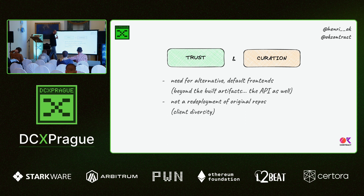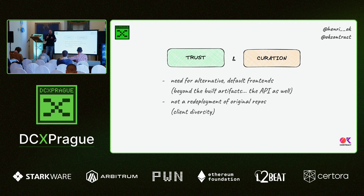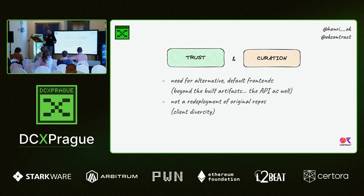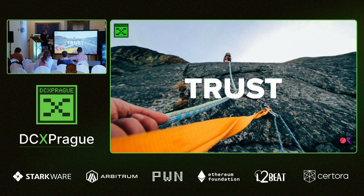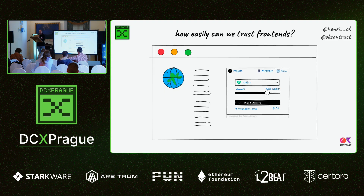That's why the importance of having alternative frontends matters for everybody, especially for the users. The main question then is: how can we trust these alternative frontends? And how can we trust not just the build artifacts but also the API? Knowing that for client diversity — which will definitely help us resist censorship — we probably need more than just a redeployment of the original frontend repos. The key issue is trust: when we see an alternative frontend, how can a user trust it? If it's not the original project, how do we know it's safe to use?